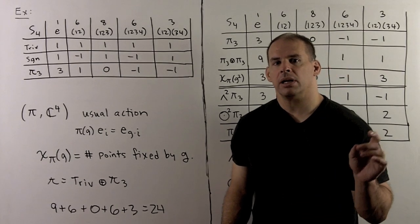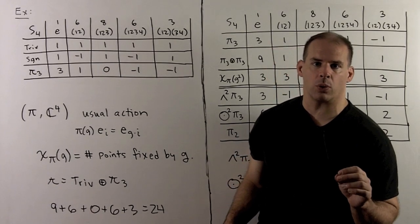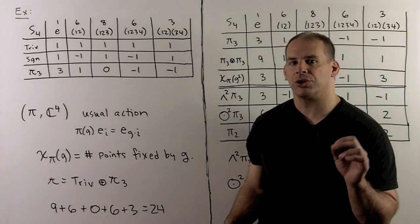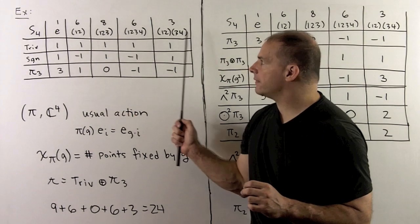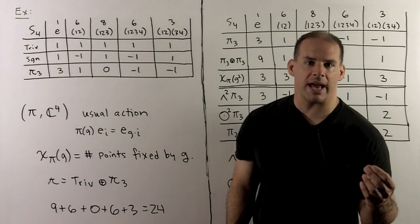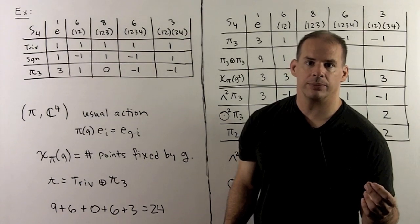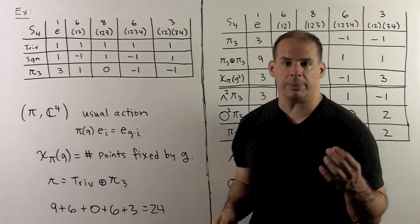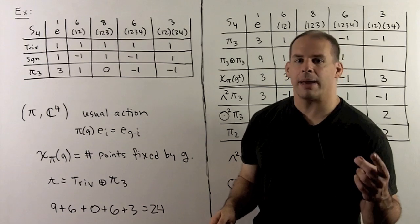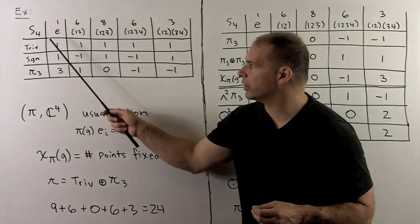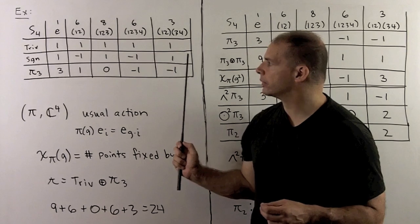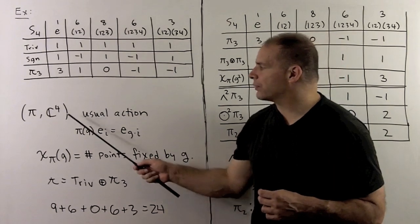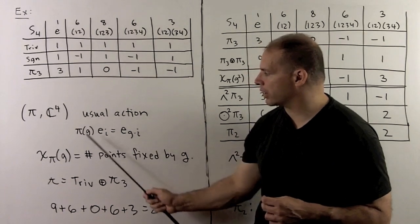As an application, let's use our formulas to fill in the character table for S4. First, we find the conjugacy classes in S4 — these are given by cycle structure. We have five conjugacy classes, which means we have five irreducible classes of representations. The commutator subgroup of S4 is A4, so the quotient (the abelianization) is Z mod 2. That means we have two characters: the trivial and sign representations. For another representation, I'll consider the usual action of S4 on C4, where we just permute the standard basis vectors.